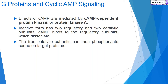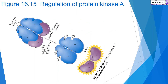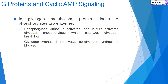The effects of cAMP are mediated by cAMP-dependent protein kinase, or protein kinase A (PKA). The inactive form has two regulatory and two catalytic subunits. cAMP binds to the regulatory subunits, which dissociate from the catalytic subunits. The catalytic subunits can then phosphorylate serine on target proteins. In the figure, you can see the regulatory and catalytic subunits; when cAMP binds to the regulatory subunit, the catalytic subunit is activated and initiates downstream signaling.